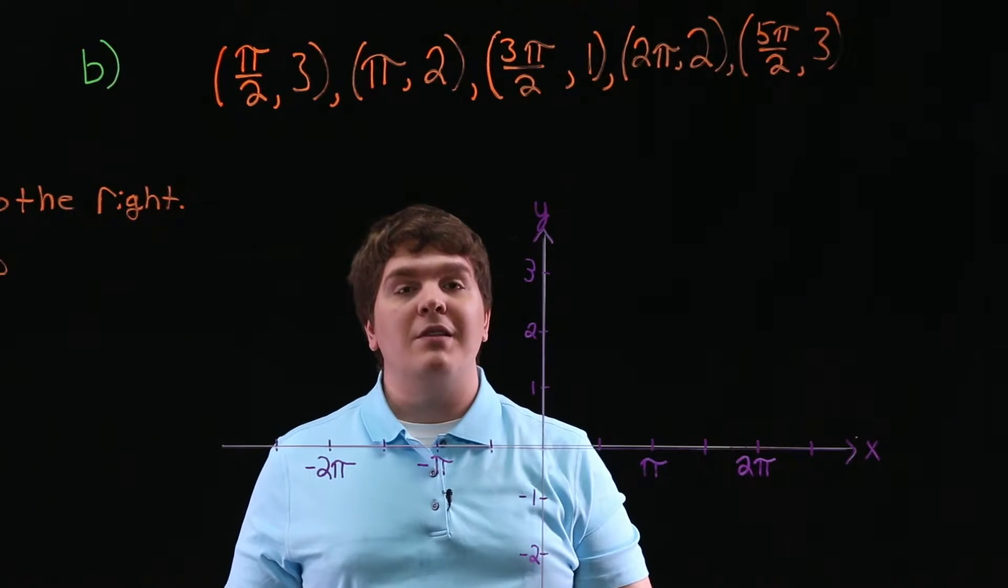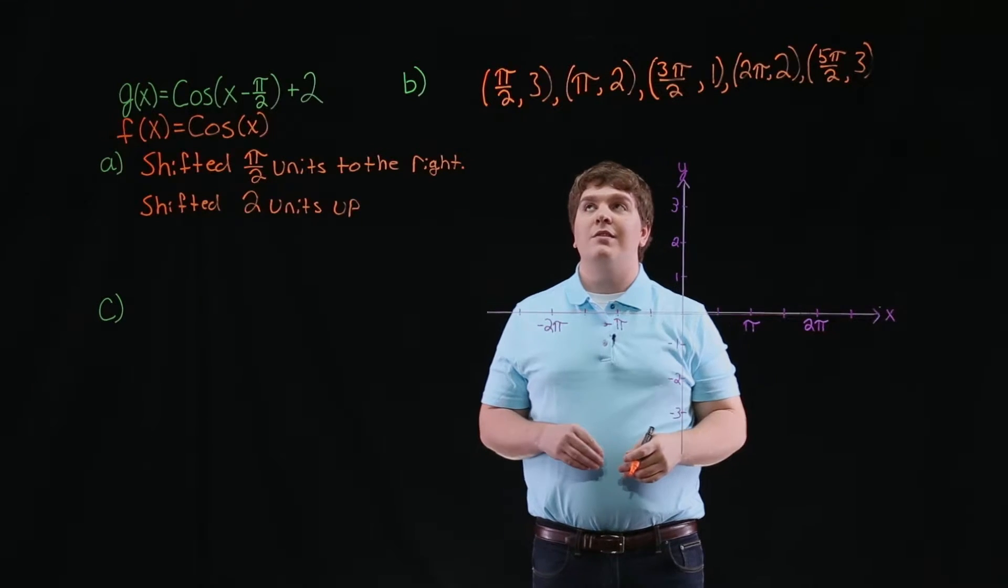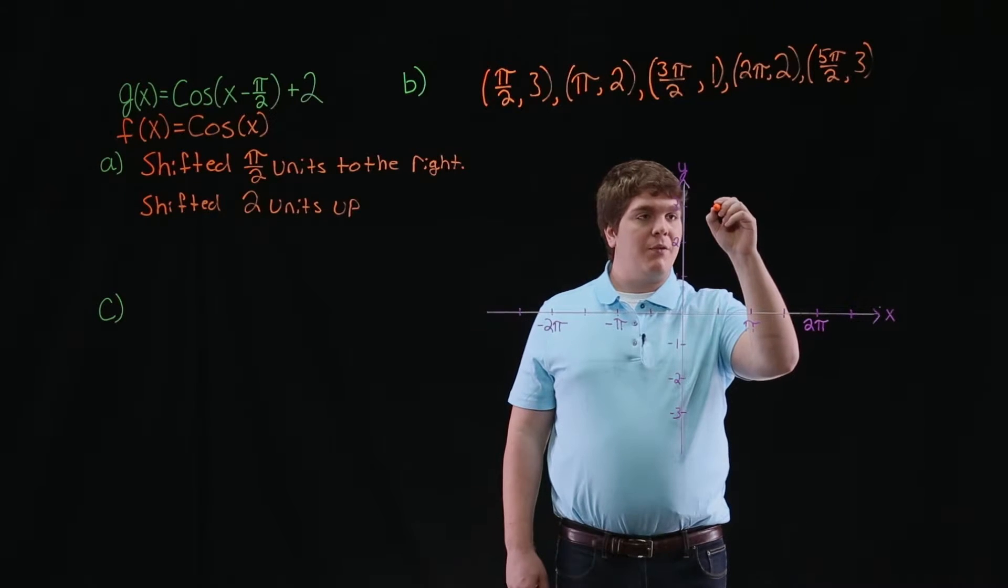Now these five points give us one period of our function g of x. So let's plot these five points. Our first point is the point pi over 2, 3.